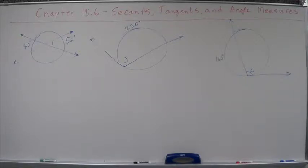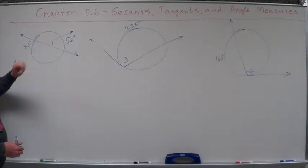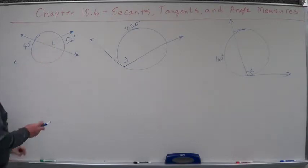Okay, let's do a few samples real quick on some of these. Here we have two secants intersecting on the inside of the circle. We want to find angle one. What do we do?